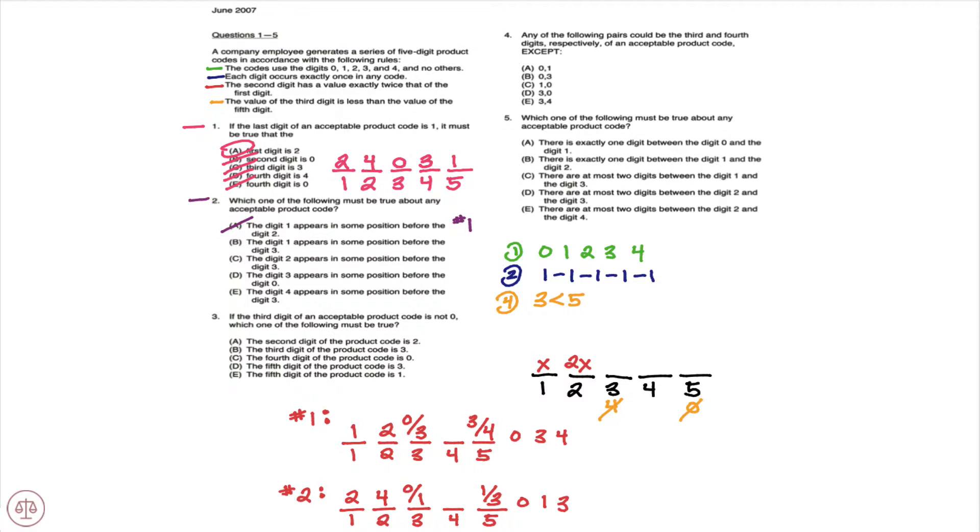B, the first digit appears in some position before the third digit. Again, coming directly from our previous work in question one, we see the third digit appear before the first digit, or the first digit appear after the third digit. So again, B doesn't have to be true, coming directly from question number one.